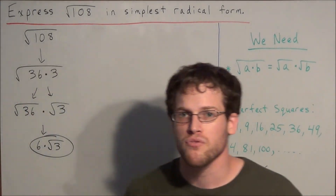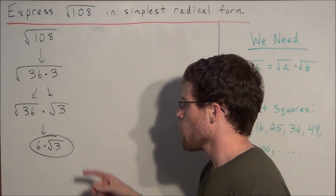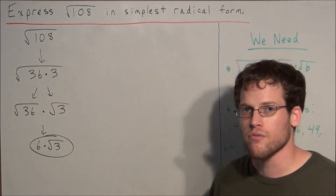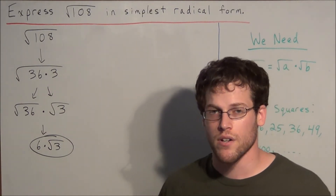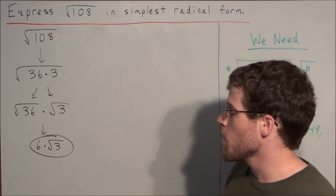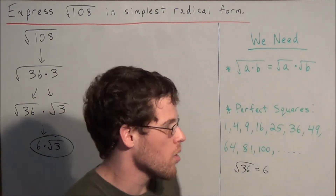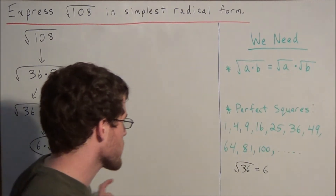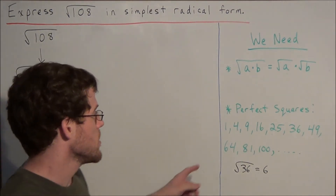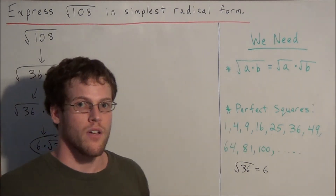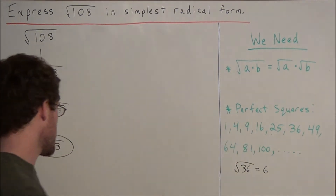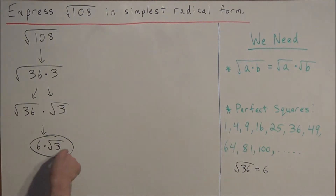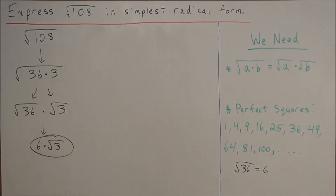What do we mean by simplest radical form? Notice how 3 — the only factors of 3 are 3 and 1. When we want it in simplest radical form, we want the only perfect square factor to be 1. We wouldn't be able to find a 4, 9, or 16 that would factor out of 3. So this is as simple as this expression is going to get.